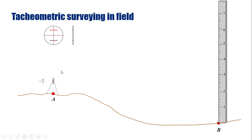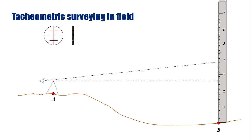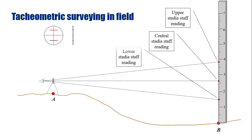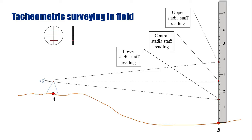One observer looks through the diaphragm. He will get a certain reading through the upper stadia hair, a different reading through the center of the diaphragm, and a different value through the lower stadia hair. The reading through the upper stadia hair is called the upper stadia staff reading; through the center, the central stadia staff reading; and through the lower hair, the lower stadia staff reading. The difference between the upper and lower stadia staff readings is called the staff intercept, represented by capital S.